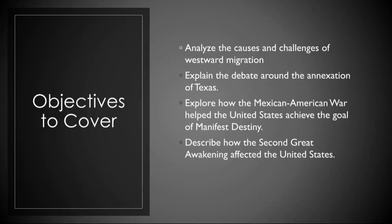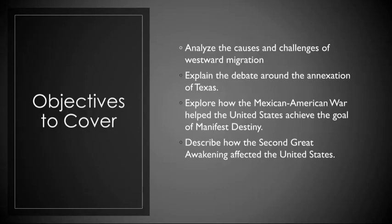The annexation of Texas was a contentious and pivotal issue in the early 1800s. Texas had declared independence from Mexico in 1836, and by the 1840s it sought to become part of the United States. Advocates of annexation, like President James K. Polk, believed it was a matter of Manifest Destiny — the belief that expansion across the continent was the nation's destiny. Texas's annexation was seen as a means to secure valuable resources and territory. Opponents, however, were concerned about the expansion of slavery into Texas and its implications for the balance of power between slave and free states. This debate over slavery would become a central issue leading to the Mexican-American War.